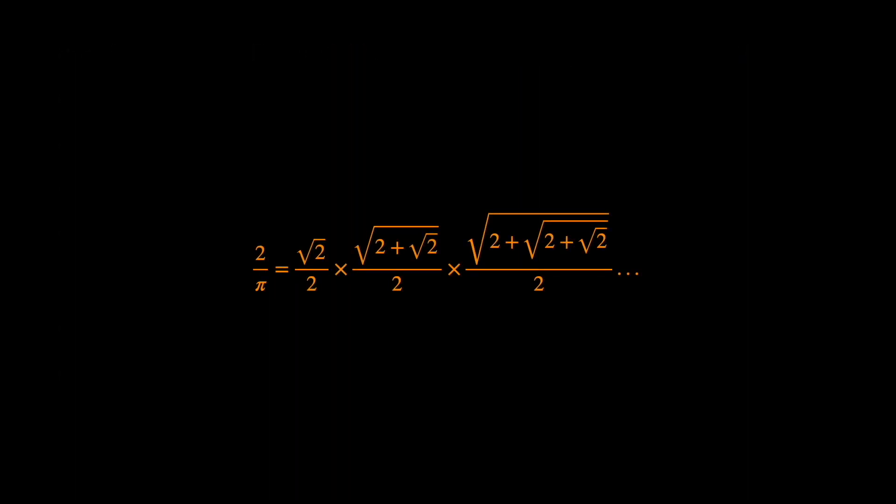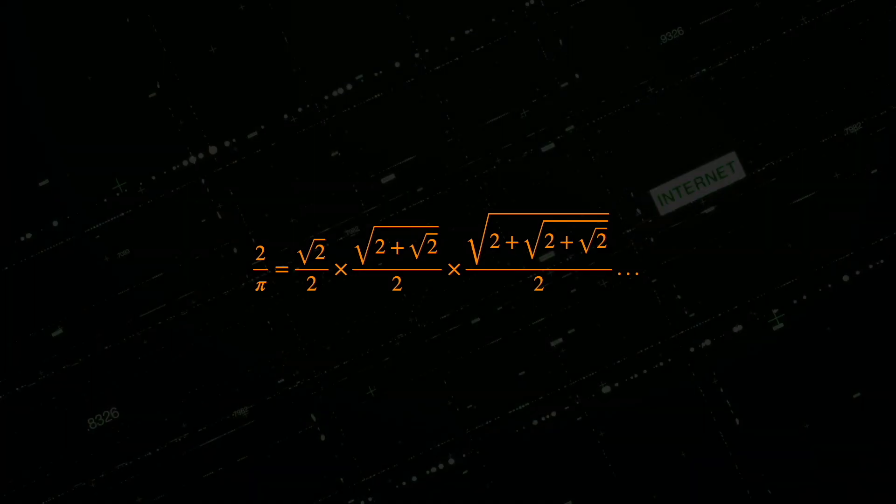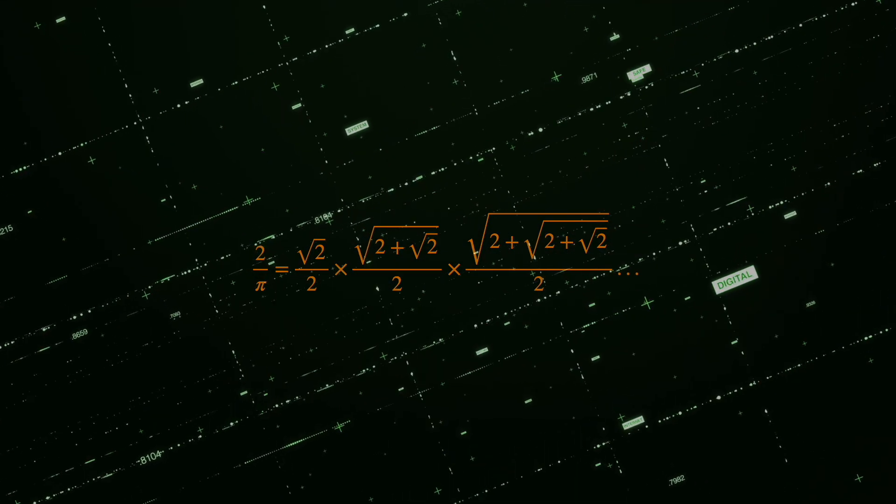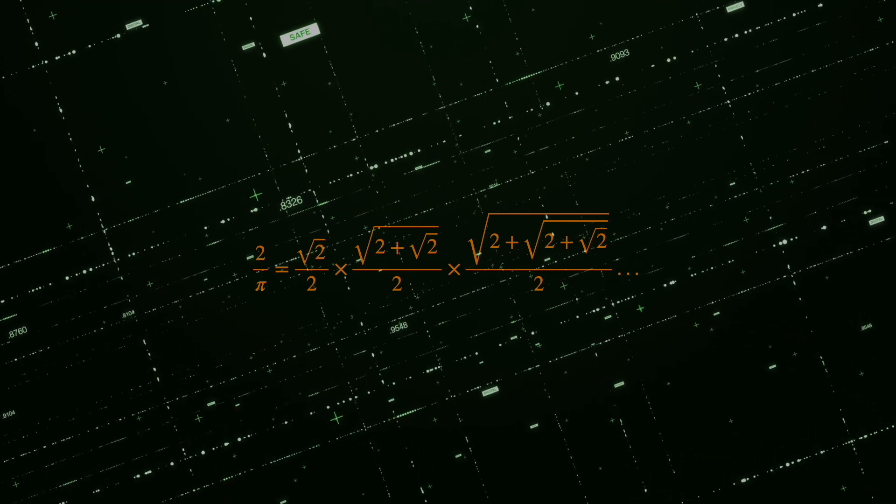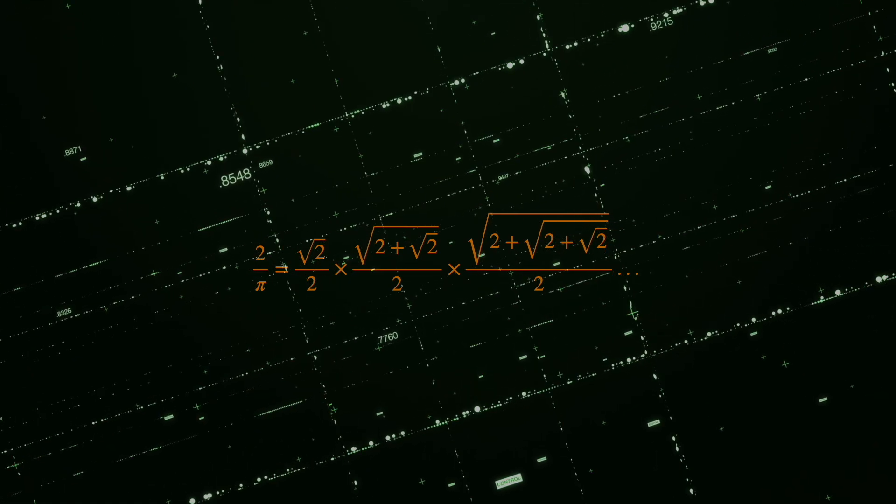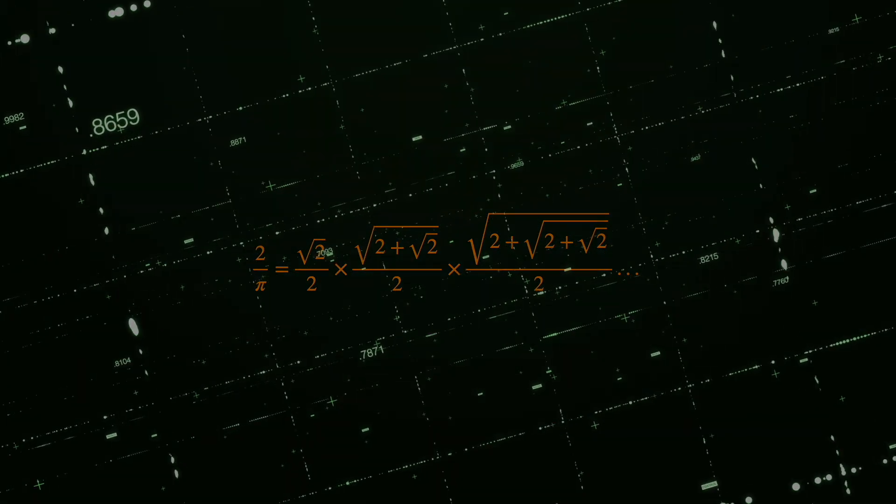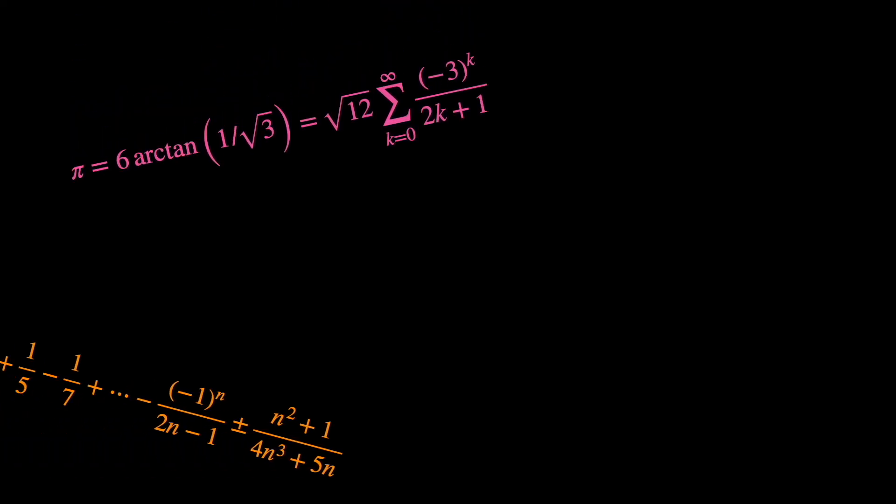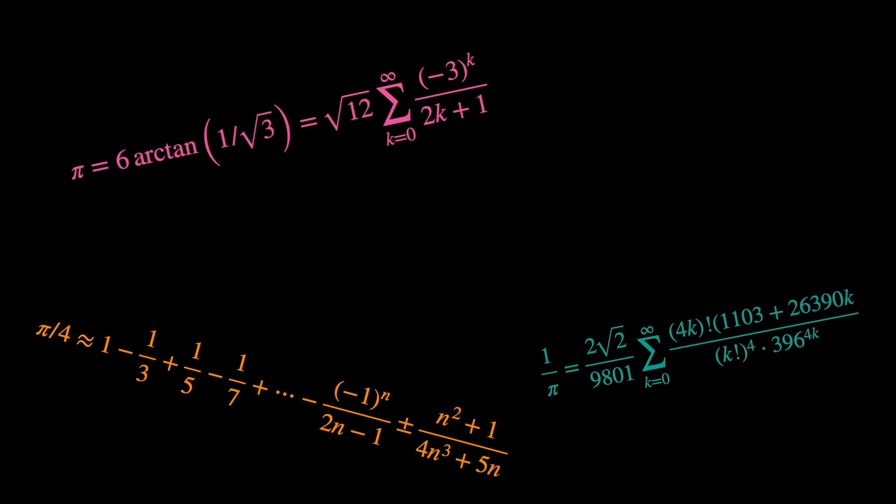This was one of the first infinite sums ever documented in the history of mathematics. This marked the transition from classical geometry to the use of algebra and analysis in understanding mathematical constants like pi. As the time passes, more modern and convenient ways were drawn up to compute pi. Even though these methods have faster conversion rates to pi and are more practicable,